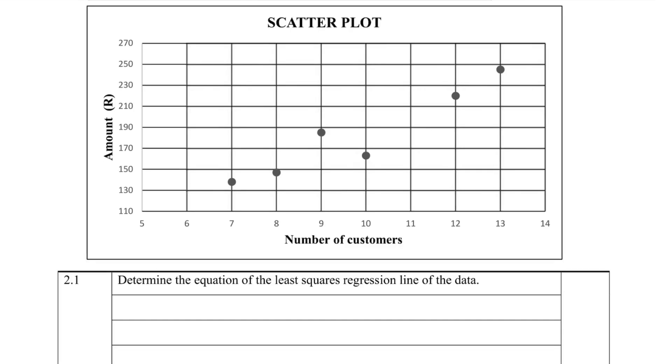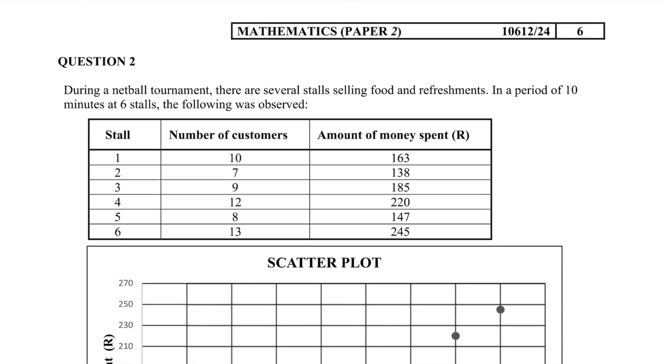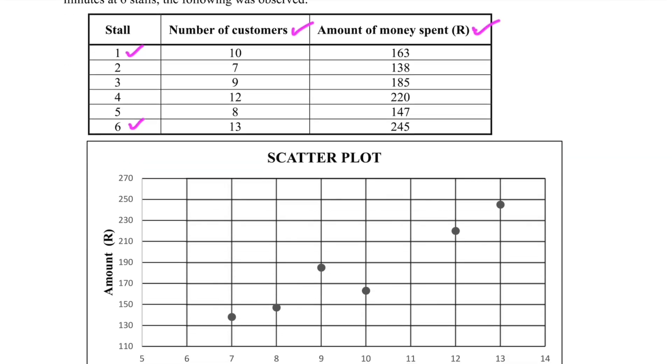Determine the equation of the least squares regression line of the data. We're given some data here. During a netball tournament, there are several stalls selling food and refreshments. In a period of 10 minutes at six stalls, the following was observed. We have our six stalls, numbered one through six, and then we are given the number of customers and the amount of money spent. Then there's a scatter plot given to us.